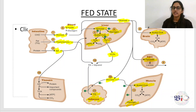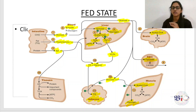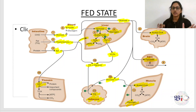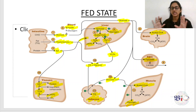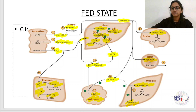VLDL from the liver enters adipose tissue, breaks down, and the fatty acids are re-esterified to form and store triacylglycerol. Amino acids can go to other tissues or to the liver for protein synthesis and TCA cycle entry for ATP production. This is the overall integration of metabolism in the fed state. Next, we will look at the fasting state.